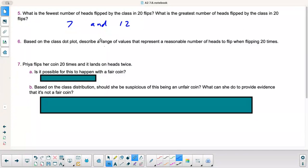Based on the dot plot, describe a range of values that represent a reasonable number of heads to flip when flipping 20 times. So based off of my data or our class's data, I would say 7 to 12. But obviously if we had a bigger class, instead of that class only having 15 total flips, it would definitely be more likely that you could get out of that range. It might be more along the lines of like 4 to 17. It just depends how many, how big your class is. So this will vary.